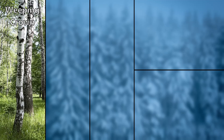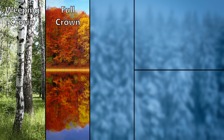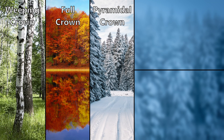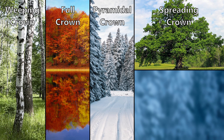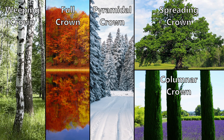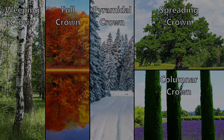The weeping crown has thin branches that droop downwards — examples are willows and white birches. Full crowned trees have a balanced shape and an even number of branches, like maple trees. Pyramidal crowns are characterized by a wide base that thins out towards the top, like a spruce. The spreading crown is often wider than it is tall, which makes them perfect for shade trees — examples are oak trees. Lastly, there are columnar crowns which have upright canopies and short side branches of roughly the same length, a good example being the Italian cypress.